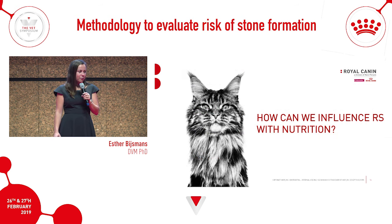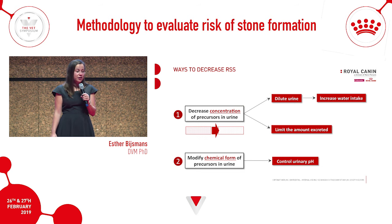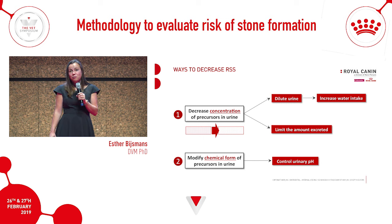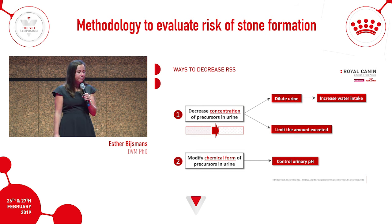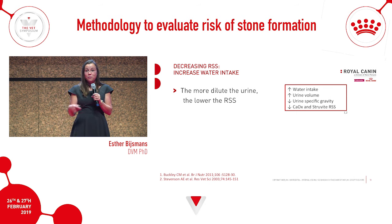How can we influence RSS with nutrition? It's actually simple - we can do two things. We can decrease the concentration of solutes in the urine by diluting it, meaning we increase water intake. Or we can limit the amount excreted by limiting the precursors present in the food. The other approach is to modify the chemical form of the precursors in the urine - mostly for struvite - by modifying urinary pH. If the urine is more dilute, the RSS will be lower.